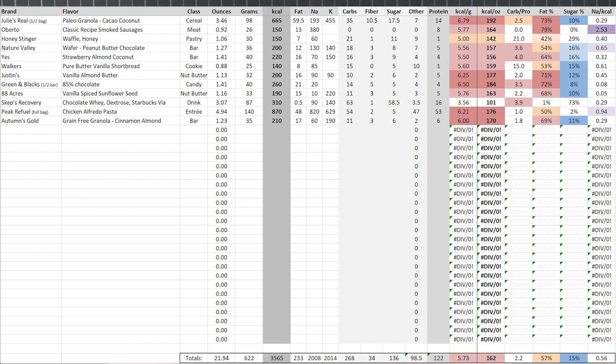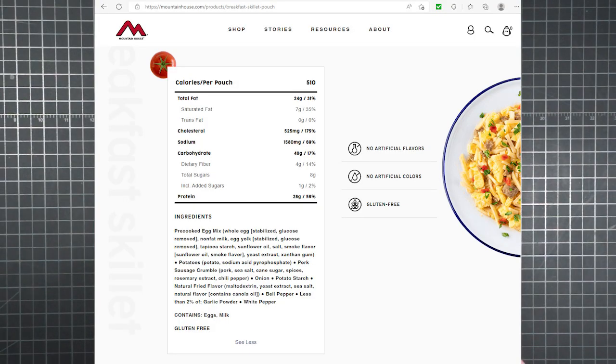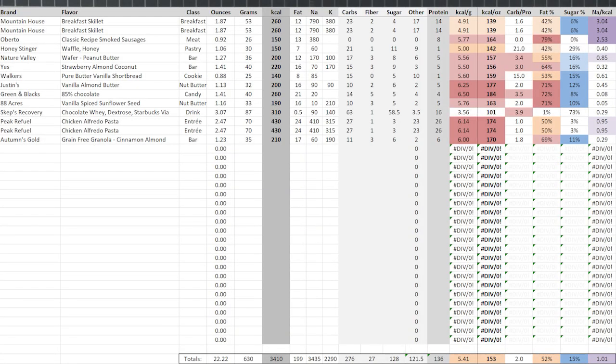Say I was to make one simple change. Swap out the granola in place of a mountain house breakfast skillet pouch. There are two servings per pouch and I'd eat them both. So I enter it twice into the menu planner. That bumps my daily totals from food to 3435 mg of sodium and 2290 for potassium.